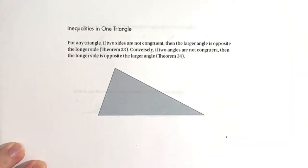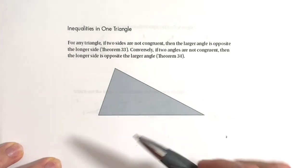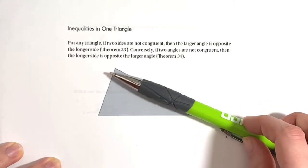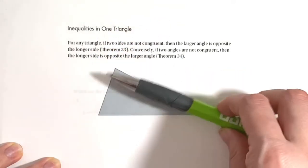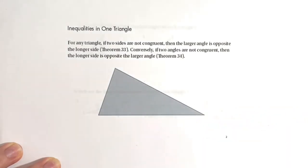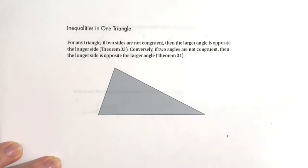For any triangle, if two sides are not congruent, the larger angle is opposite the longer side. On the flip side, if two angles aren't the same size, the longer side is across from the larger angle. This is called the hinge theorem or door theorem — the farther you open a door, the longer that distance is. The bigger the angle, the longer the side.